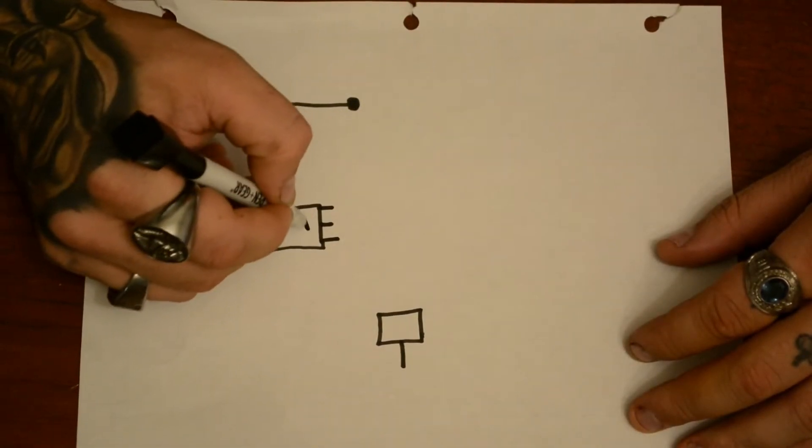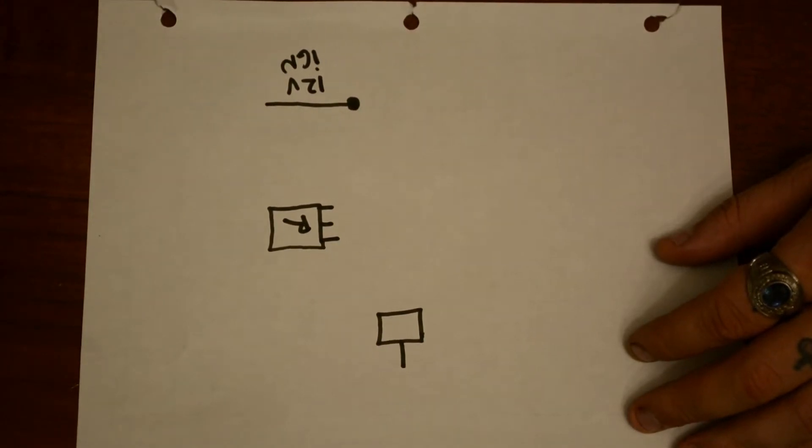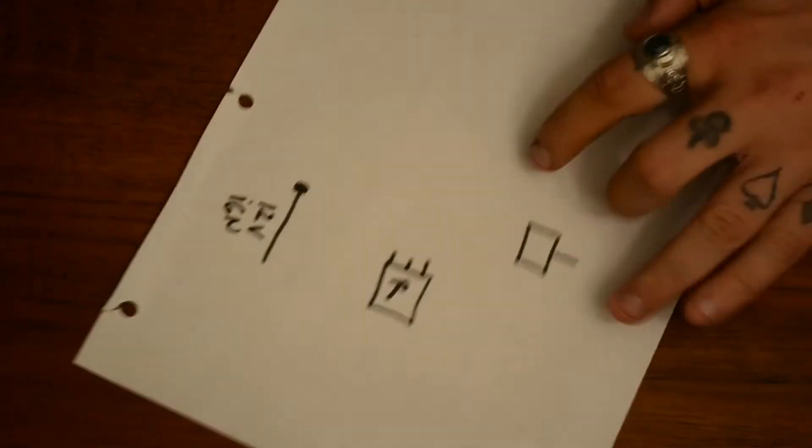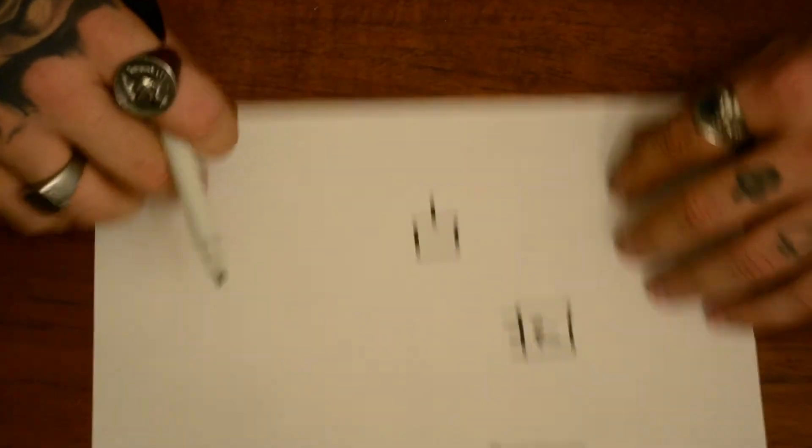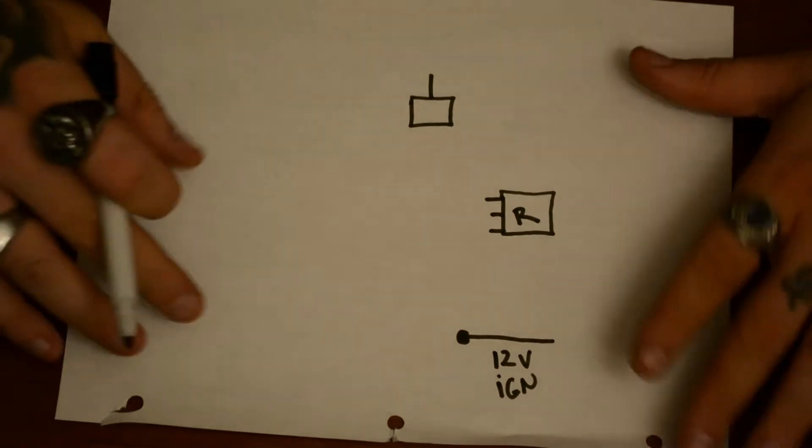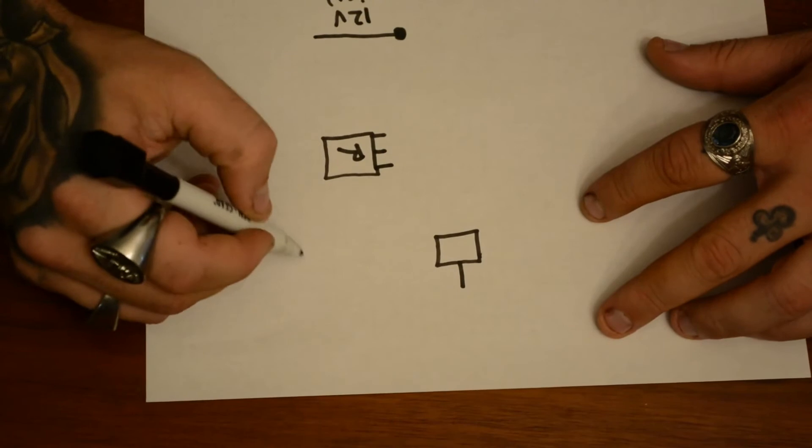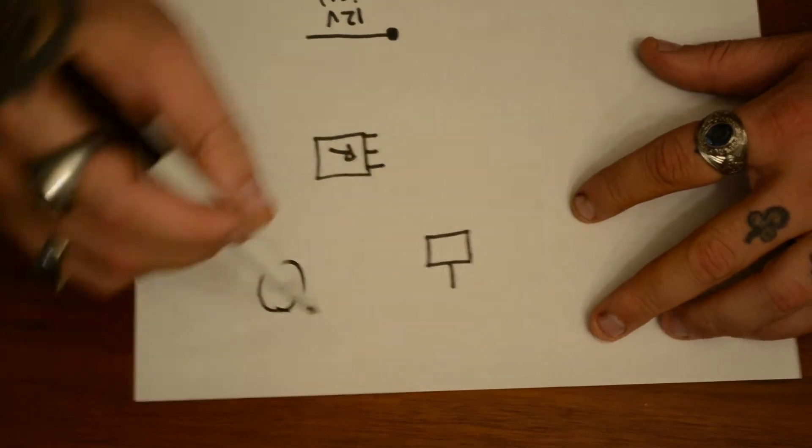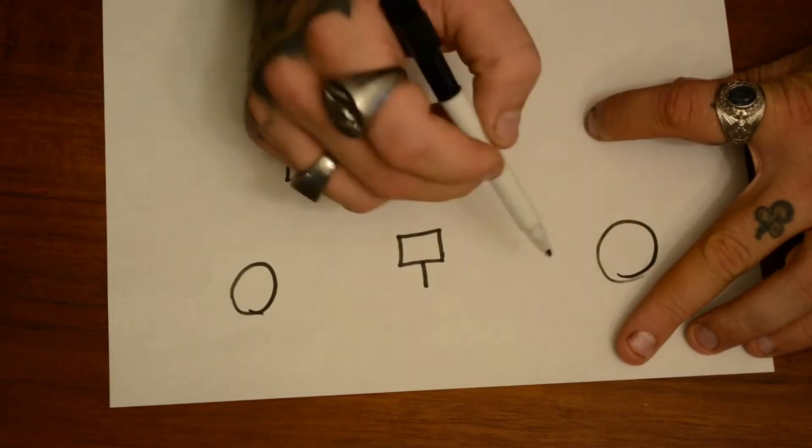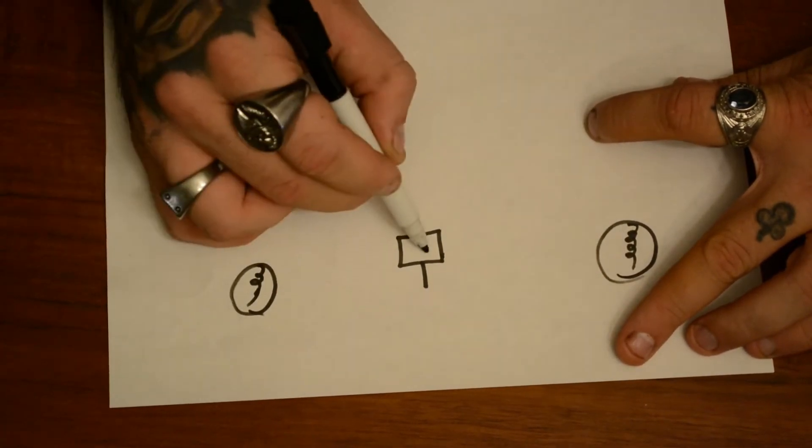We're going to put R on that for relay. Just in case anybody wants to pause this. I'm also not going to do it upside down, I'm going to do it to where you can see it. So this is what we have so far. Of course we're going to need some lights. These will be our lights, right and left. We're going to put switch.